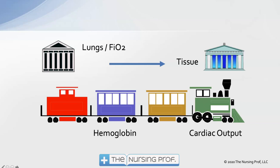We can manipulate the cardiac output by manipulating our stroke volume or our heart rate — those are the components that make up cardiac output. By increasing our preload or increasing contractility, decreasing afterload, we can manipulate cardiac output to try to increase how fast that train is moving. Finally, at the tissue level we can decrease tissue oxygen consumption by decreasing activity and decreasing fever. Those are the main components we have some control over. The hemoglobin piece is a little bit more difficult to manage.